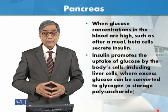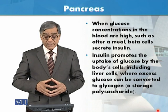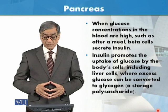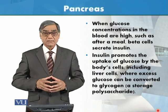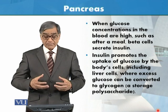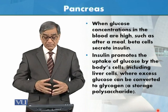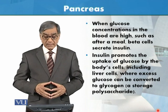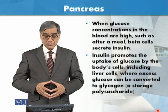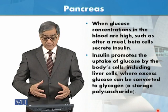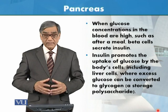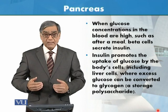When glucose concentration in the blood is high, such as after meals, beta cells secrete insulin. Insulin promotes the uptake of glucose by body cells, including liver cells, where excess glucose can be converted into glycogen, a storage polysaccharide.